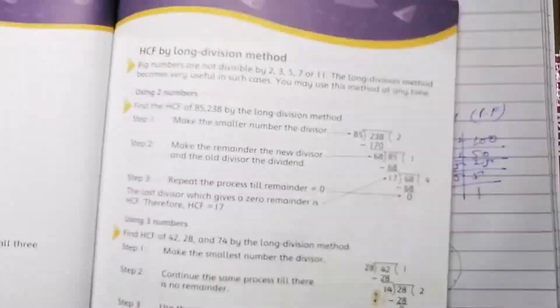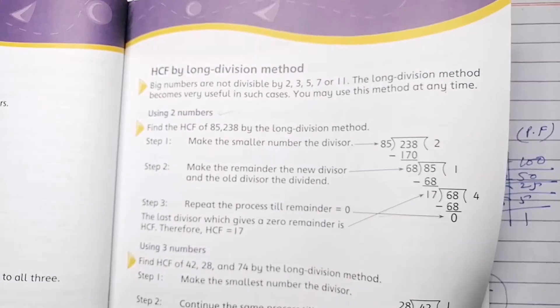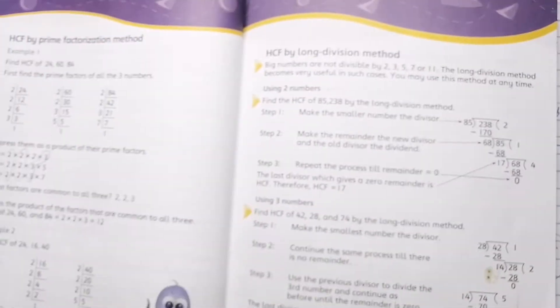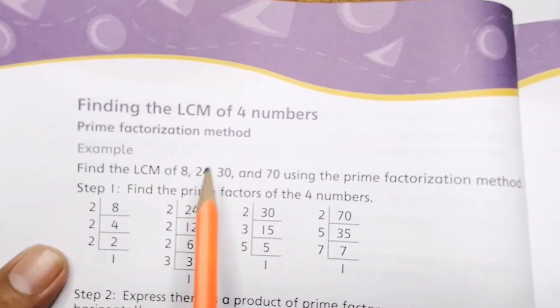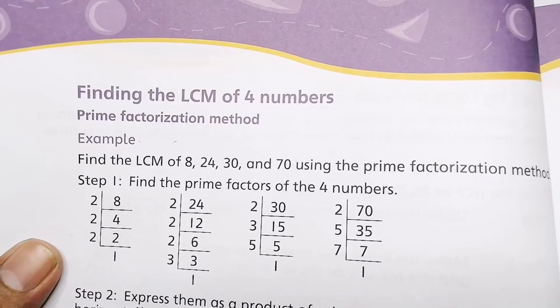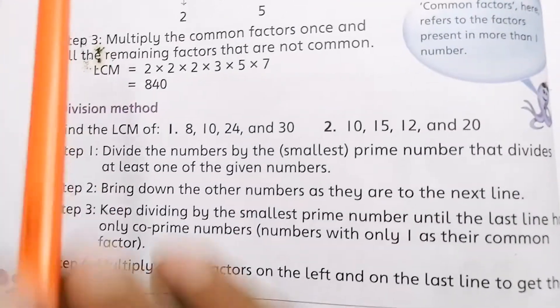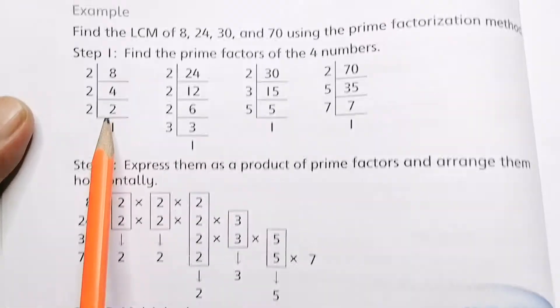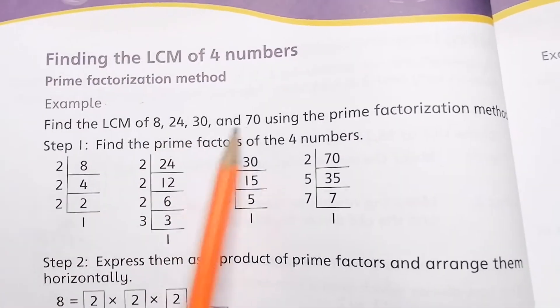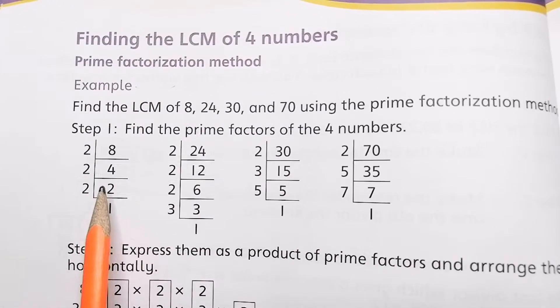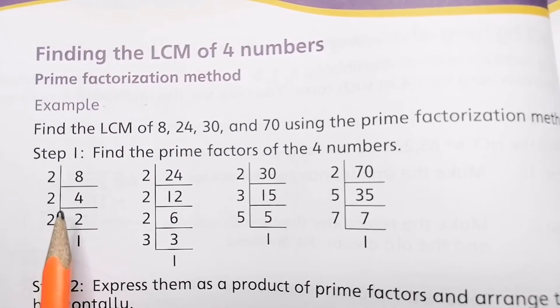So now we move to the other part: we have done HCF by prime factorization and long division method. Now we take LCM — LCM by prime factorization method and then LCM by division method. In this example, numbers 24, 30, and 70 are given. We find LCM by prime factorization method.